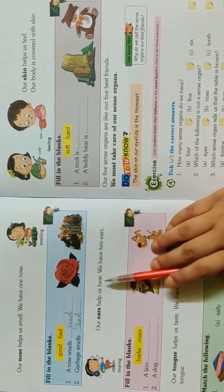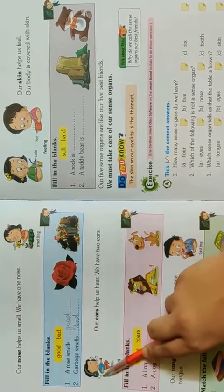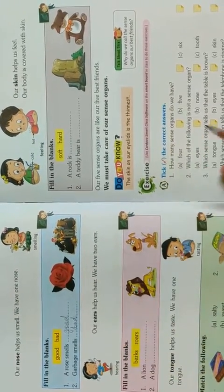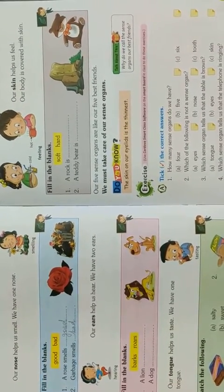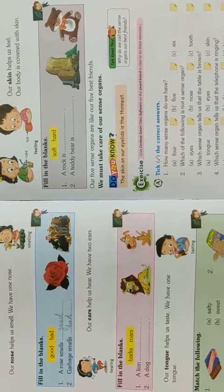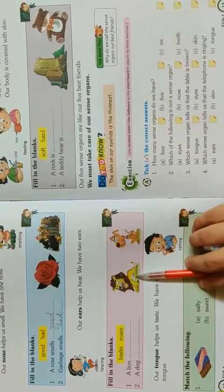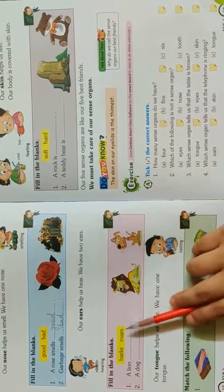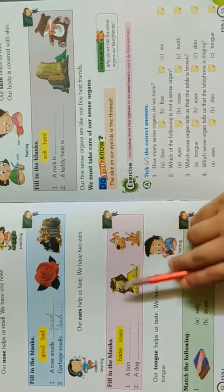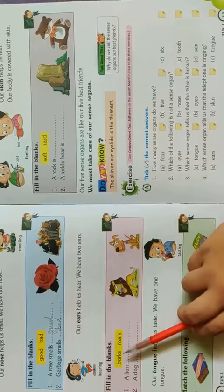Our ears help us hear. We have 2 ears. This boy is hearing songs in the headphones. If your mummy is calling you, you will hear with your ears. How many ears do we have? We have 2 ears. Now see the picture — a lion and a dog. What sound does a lion make? A lion roars. What sound does a dog make? A dog barks.